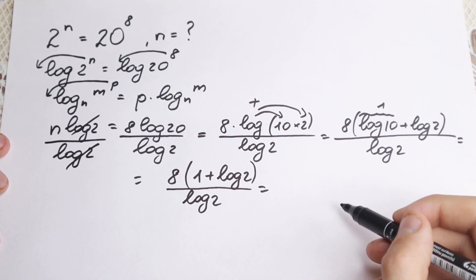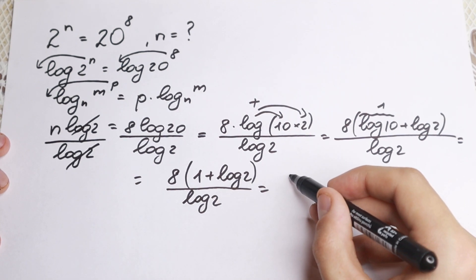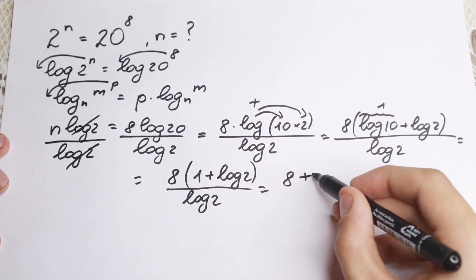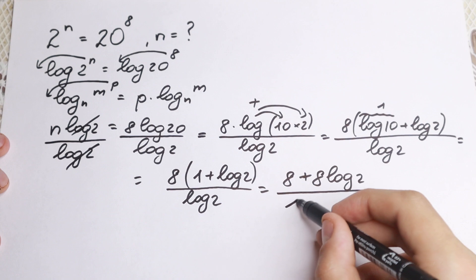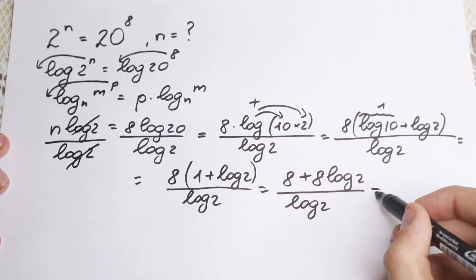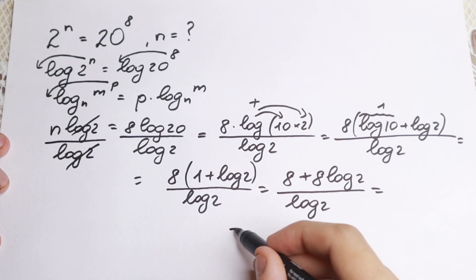Let's divide it by parts. First of all, let's multiply it and divide it. We will have 8 plus 8 logarithm 2, so multiplying our numerator, dividing by logarithm 2 and dividing it by parts. So this one divided by this one and this by this one. So what we'll have?